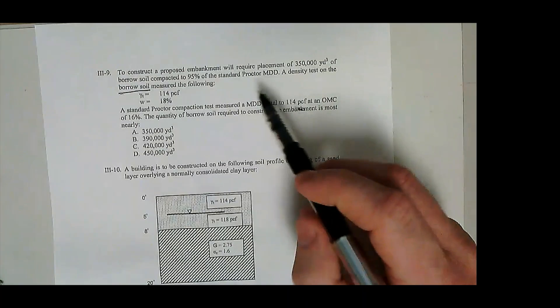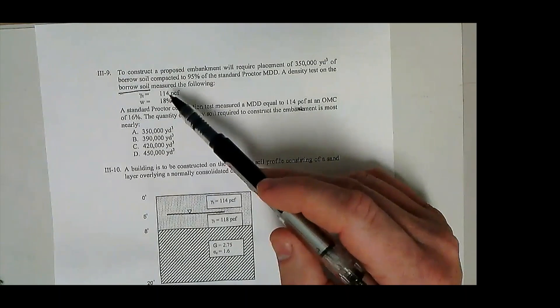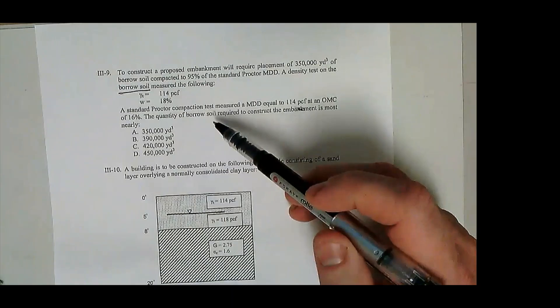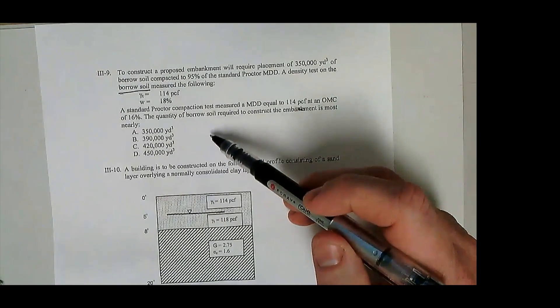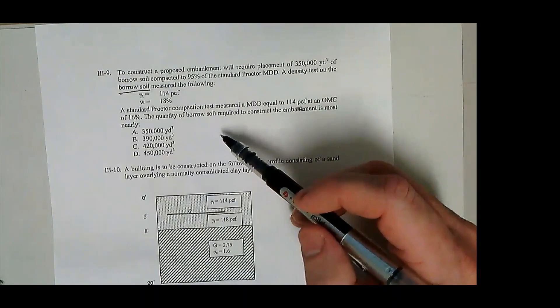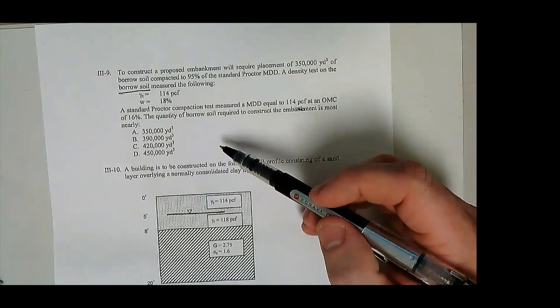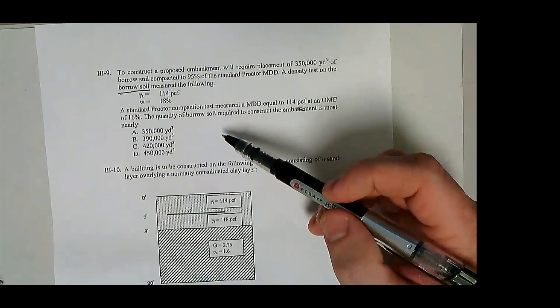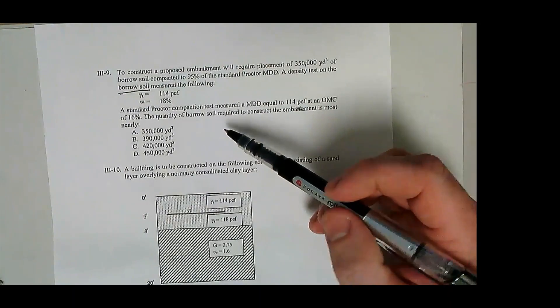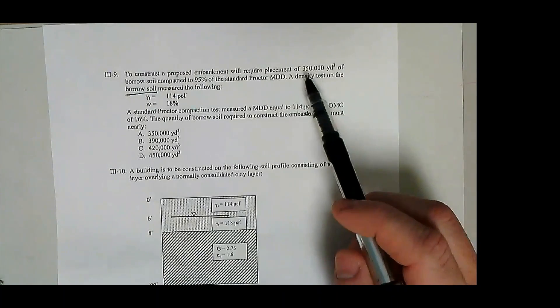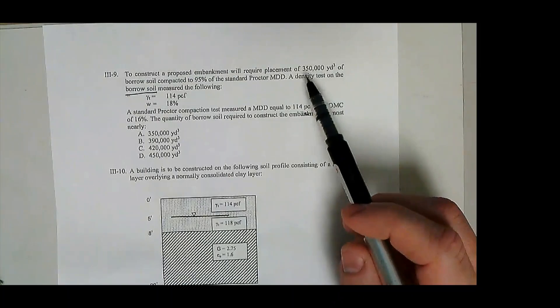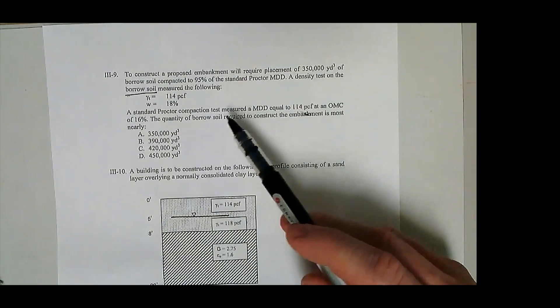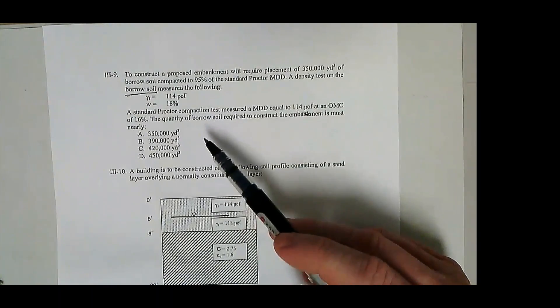So you know what it is before you dig it up, right? It's 114 PCF divided by one plus the water content, 18%. That's the dry density in place before you dig it up. And then you're going to compact it to a larger density, which if you think about what that means - if you're going to compact it to a more dense configuration than it is when you dig it up, that means you need to dig up more than what you're actually going to place. So at the end of the day, your embankment's going to be composed of 350,000 cubic yards of soil, but in a denser configuration of what you're digging up. So the real question is how much borrowed soil do you need to dig up and transport to your site to construct the embankment based on how much you're going to compact it.